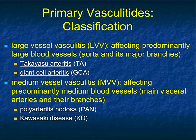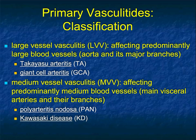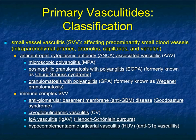They break things up into large vessel vasculitis, which includes Takayasu's and giant cell arteritis. They then define medium-sized vasculitis, which affects predominantly medium-sized blood vessels, mainly the visceral arteries and their branches. In that category, we think about polyarteritis nodosa and Kawasaki's disease — two big terms in that category.